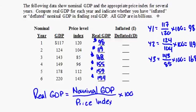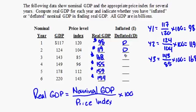The question asks whether we inflated or deflated nominal GDP to find real GDP — that is, did we increase or decrease it? This depends on whether we divided by a number greater or less than 100. In years one and two, we divided by a price index greater than 100, so we deflated nominal GDP. In years three and four, the price index was below 100, so we inflated nominal GDP. In the last two years, we deflated it again.